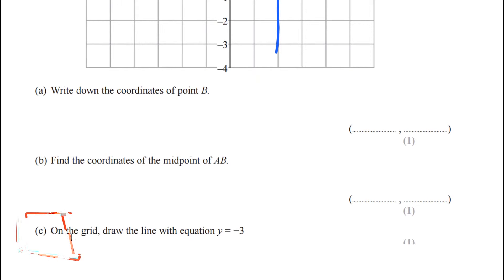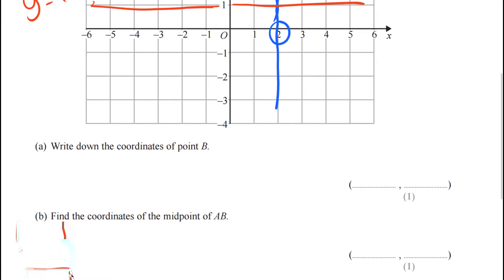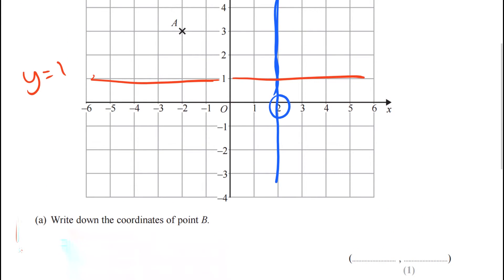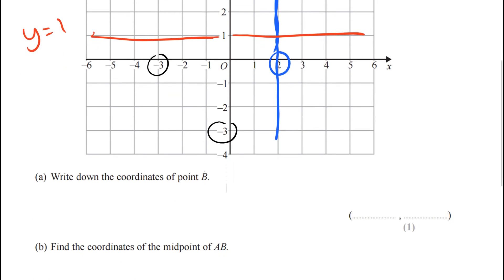On the grid draw the line with the equation y equals minus 3. So there's a minus 3 here, there's a minus 3 here. So which one are we going to draw the line through?